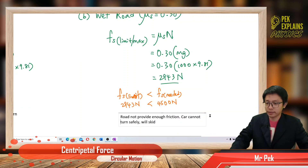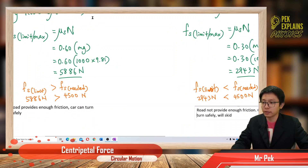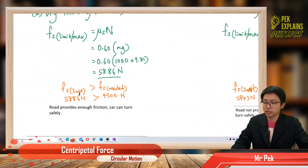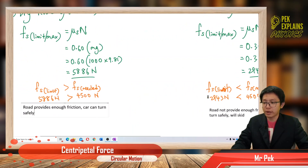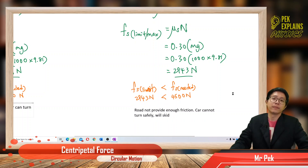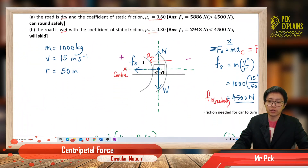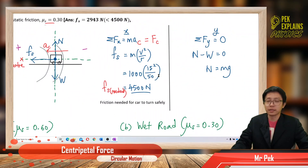So that's the conclusion. To determine whether the car can turn or cannot turn, just check the limiting static friction the road provides. If the limiting static friction is more than the friction required, the car can turn safely. If it is less, the car cannot turn safely and will skid. Remember to draw the free body diagram for all things to work. Thank you, bye.